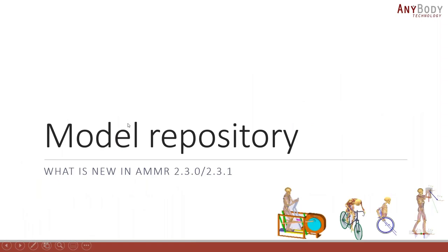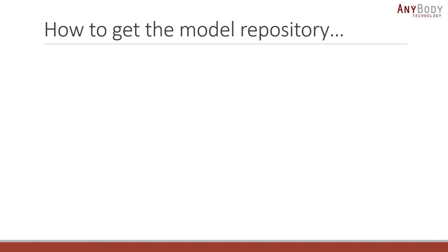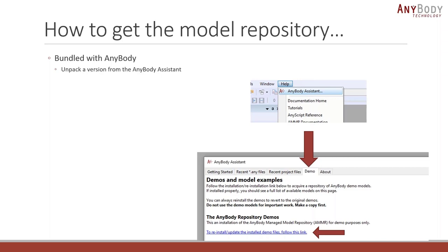This brings us to what's new in the model repository. The easiest way to get the new model repository is to take the version bundled with AnyBody. When you install the newest version 7.3.1, go to Help, then AnyBody Assistant, and select the Demo tab. There is a link that allows you to unpack the version into your documents folder. We really recommend that you do that to get your own copy of the model repository, as it's not recommended to modify the read-only install files directly.